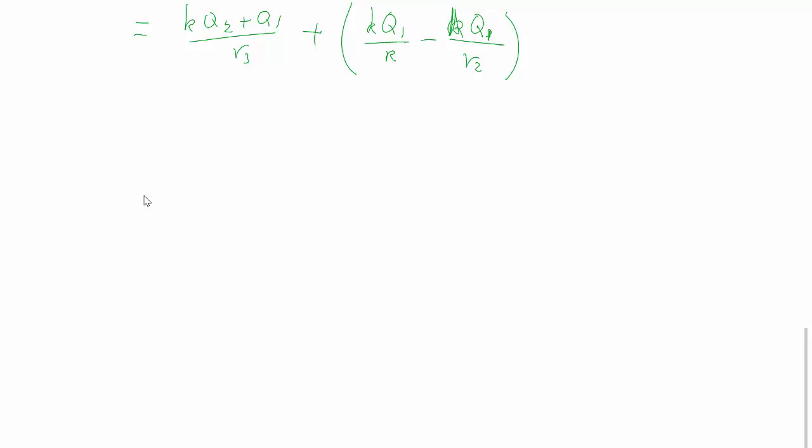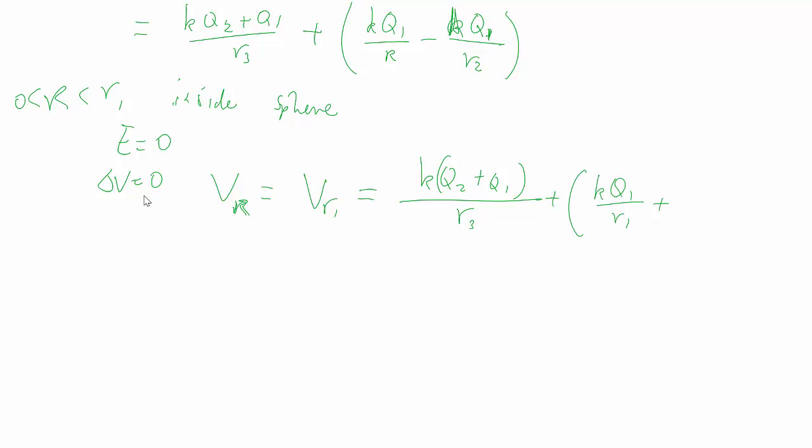And then last but not least, we have inside the sphere itself. This is again a case where E equals zero, so change in V equals zero. So everywhere, Vr (of course greater than zero, you can't have a negative r), everywhere is equal to whatever potential it was when it was at r1, which we take the last result and sub in r1.